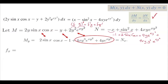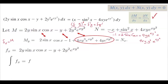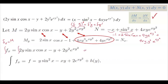The next step is to set the partial derivative of f with respect to x equal to M: ∂f/∂x = 2y·sin(x)cos(x) − y + 2y²·e^(xy²). We then integrate both sides with respect to x to find f(x,y). Taking the integral term by term with respect to x gives us f(x,y).